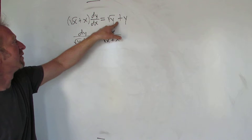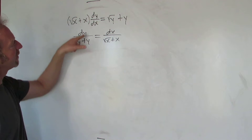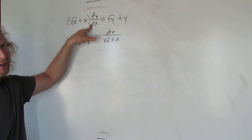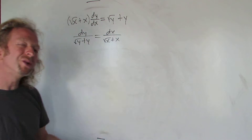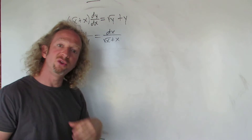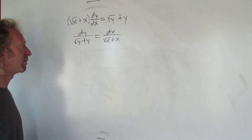So we have dy — we divide by this, so we get that. And then you just multiply by the reciprocal to get that. Once you get here, you're able to integrate both sides.